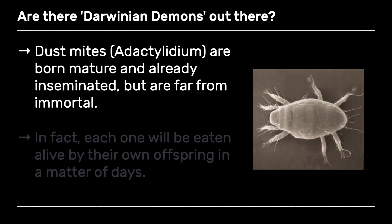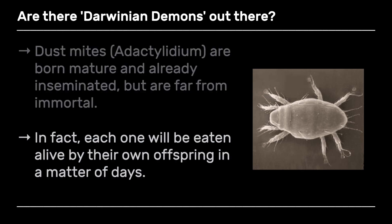One potential organism approaching a Darwinian demon is a dust mite. This particular creature is born adult and inseminated — when they come out, they are already adult and already fertilized. But they are far from immortal. In fact, each one of these daughters will be eaten alive by her own offspring in a few days, so they do not really represent a Darwinian demon.